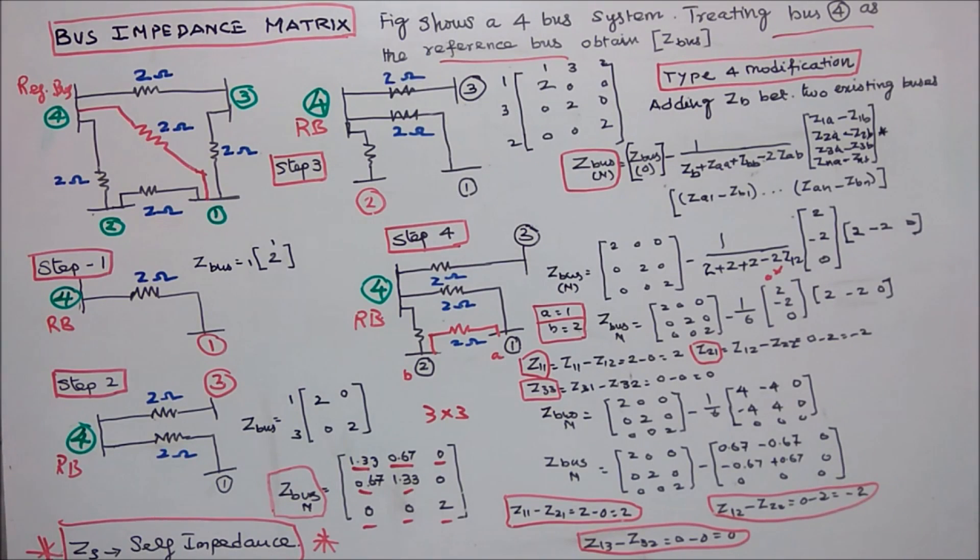Last class I wrote ZS is equal to self-admittance, that is wrong. ZS is equal to self-impedance. Very sorry for that.